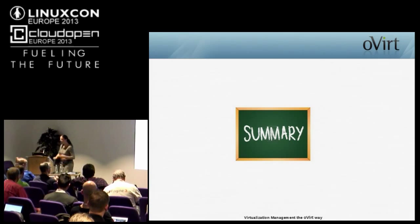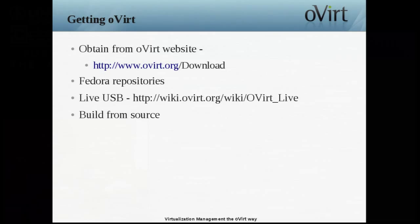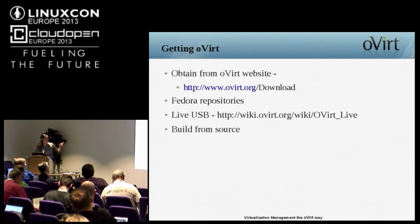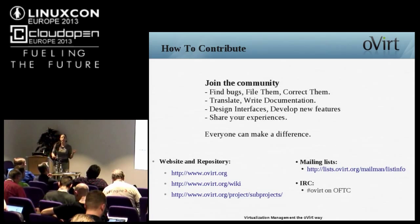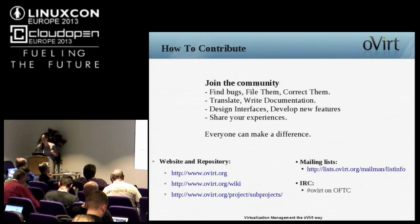You can get oVirt — just go to the download page. You can get a live USB: as simple as plugging it into your laptop and trying it. It's available in Fedora repositories. You can build it from source if you're adventurous. And you are welcome to contribute, even if it's just by stating your opinion and saying what features you're missing. We love getting feedback from the community and working on features the community asks for.